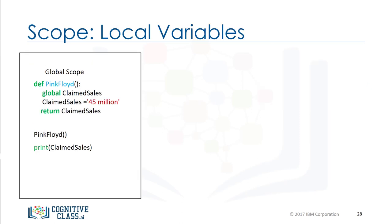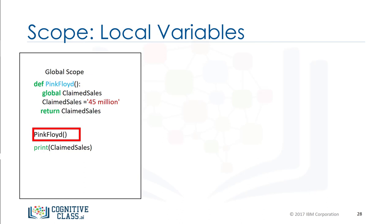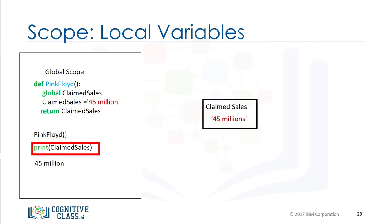Consider the function pink_floyd. If we define the variable claimed_sales with the keyword global, the variable will be a global variable. We call the function pink_floyd, and the variable claimed_sales is set to the string '45 million' in the global scope. When we print the variable, we get a value of 45 million. There is a lot more you can do with functions — check out the lab for more examples.